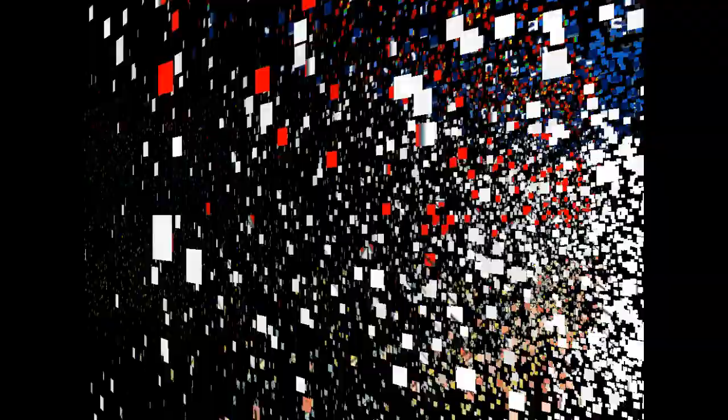Here's another perspective view. You can see that the upper right-hand corner of the periodic table has the higher electronegativities and the lower left-hand side has the lowest electronegativities. Notice on the right-hand side there are no noble gases — they do not have any electronegativity. They do not want to pull electrons in because they have full valence orbitals and don't want any more electrons.